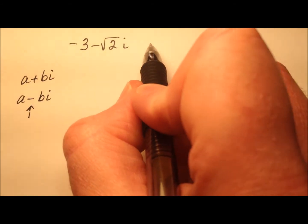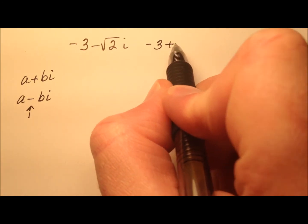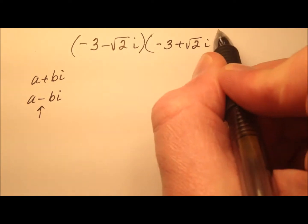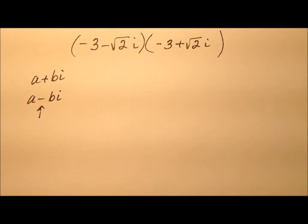So when we do that, we'll get negative 3 plus the square root of 2i. This is the complex conjugate. Now that we have it, let's multiply these two together.